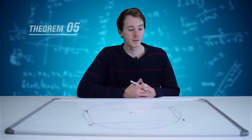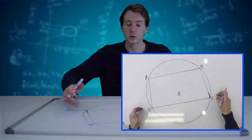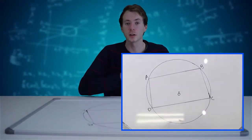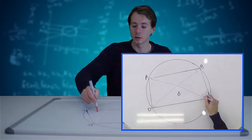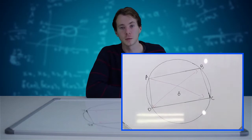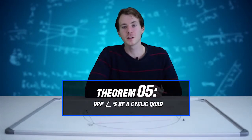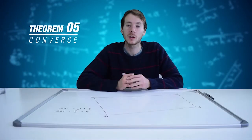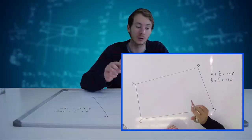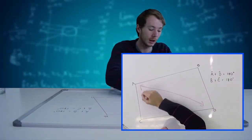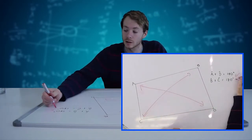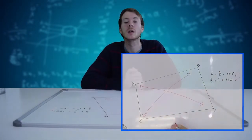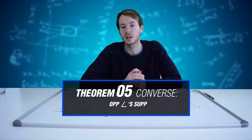Theorem 5 states that if I have a cyclic quadrilateral — a quadrilateral in which all four points are touching the circumference of a circle — the opposite angles such as D and B, and A and C, are going to be supplementary, meaning they add up to 180 degrees. The proof is: opposite angles in a cyclic quad. Theorem 5's converse states that if a quadrilateral's opposite angles such as A and D, and C and B, are supplementary or add up to 180 degrees, then this quadrilateral is going to be cyclic. The reason is: opposite angles are supplementary.